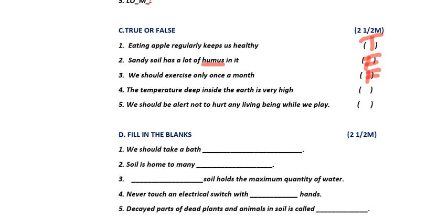Fourth question: the temperature deep inside the earth is very high. Yes, inside the earth the temperature is very high, so the answer is true — T. Fifth question: we should be alert not to hurt any living being while we play. Yes — while playing, we should make sure no other humans, animals, or birds are nearby so we do not hurt them. True. So the answers are: true, false, false, true, true.